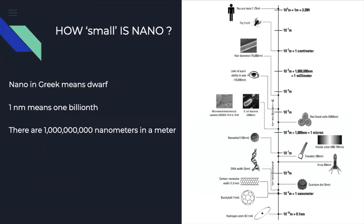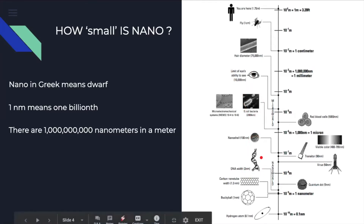To appreciate the scale of nano, which is scientifically one billionth, start from a typical human of 1.75 meter height, progressively go down to a fly, then to a human hair, to the limit of the human eye, and then to a bacterium, and finally to DNA, which is 2 nanometers in width.